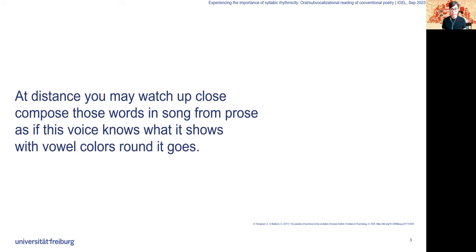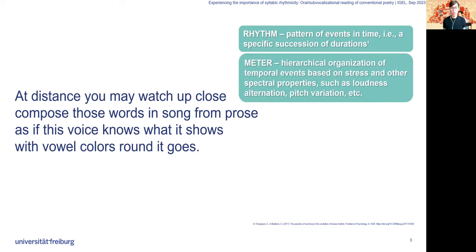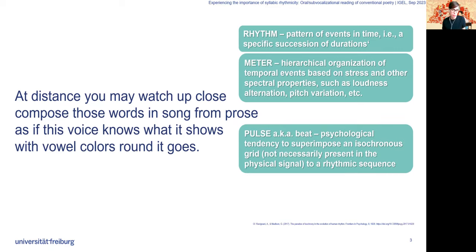This example serves to exemplify our working definitions from Ravignani and Medicine 2017. We've got rhythm defined as a pattern of events in time, a specific succession of durations. We've got meter, the hierarchical organization of temporal events based on stress and other spectral properties.